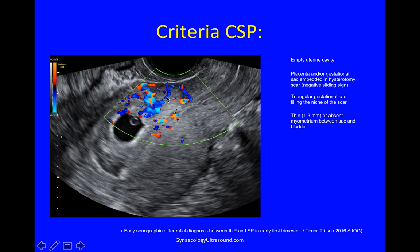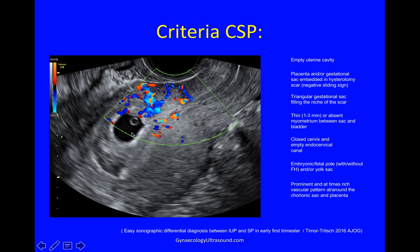A thin or absent myometrium between the sac and the bladder — in this case the bladder is empty, though it's better if slightly filled. Closed cervix and empty endocervical canal: here is where the bladder attaches to the uterus, so this is more or less the level of the internal os, and you can see the pregnancy is nowhere near the cervical canal. Then you need either a yolk sac and/or an embryo with or without a fetal heart, and prominent vascularity showing that the trophoblast is embedded in the myometrium and not just passing through in the case of a miscarriage.